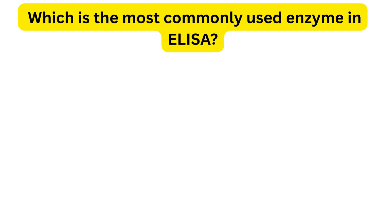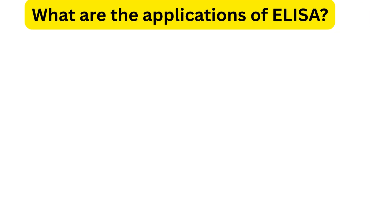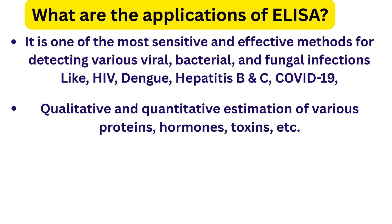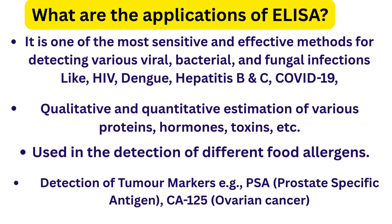The enzymes most commonly used in ELISA are horseradish peroxidase and alkaline phosphatase. Applications of ELISA include detecting infections like HIV, hepatitis B and C, dengue, and COVID-19; pregnancy tests; measuring hormones like insulin and FSH; identifying allergic reactions; cancer diagnosis to detect markers like PSA; and detecting toxins, contaminants, or pathogens in food samples.